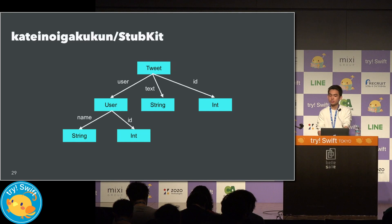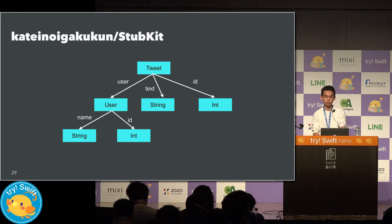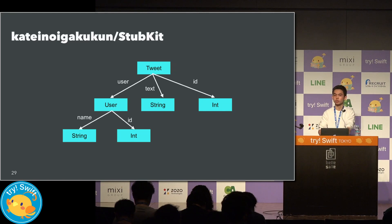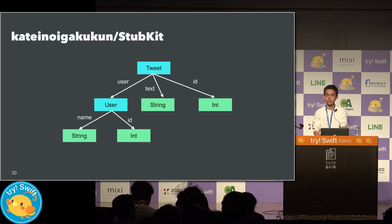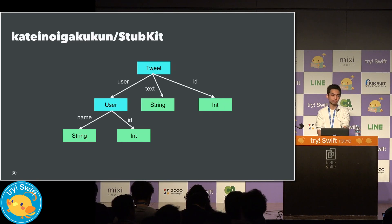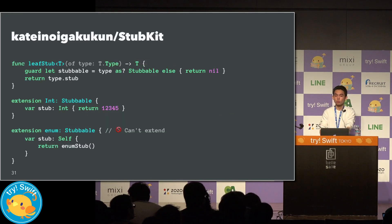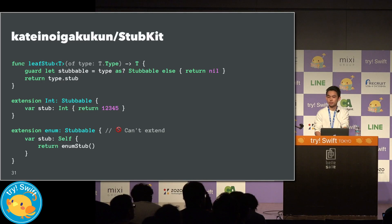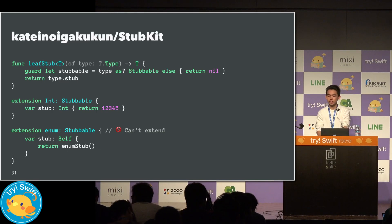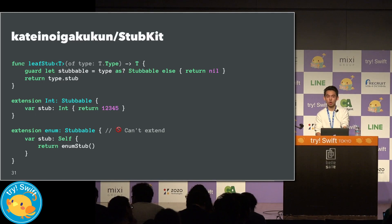The last use case is my library, StabKick. This library enables instantiating stubs without any arguments, and makes it easy to instantiate structs with many many fields. Most of this feature is implemented with Codable, but some features are implemented using metadata. Here's how the stub function works: a basic struct forms a tree structure, and you can traverse it using the Decoder protocol. So if we prepare the stub of a leaf and inject it while traversing, we can instantiate any type of stub without argument. For example, String, Int, and enum can be leaf types.